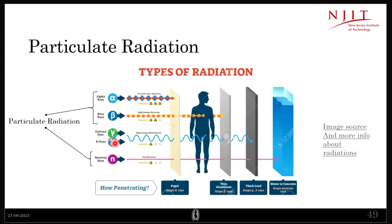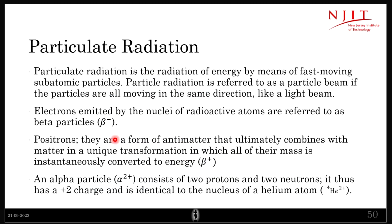We have gamma rays and x-rays which are electromagnetic radiation. These are two different things because particulate radiation has a charge. Electrons have a charge — they are negative particles. Alpha particles have a plus two charge because they have two protons. So particles have charge, while EM waves don't have any charge.